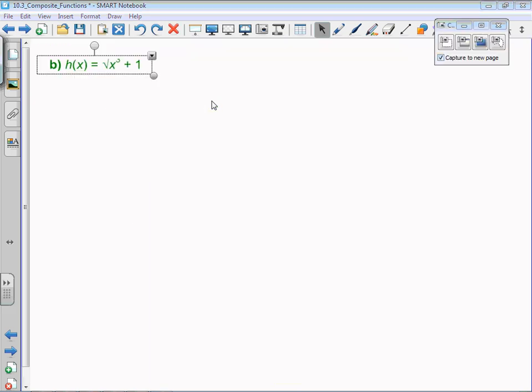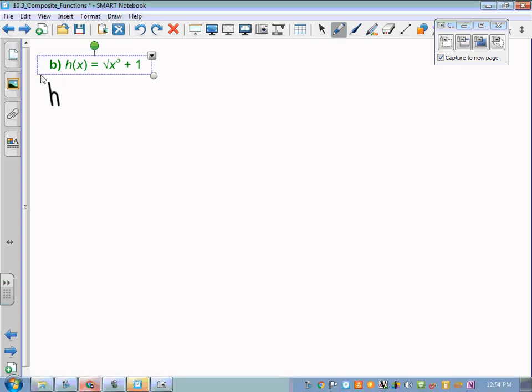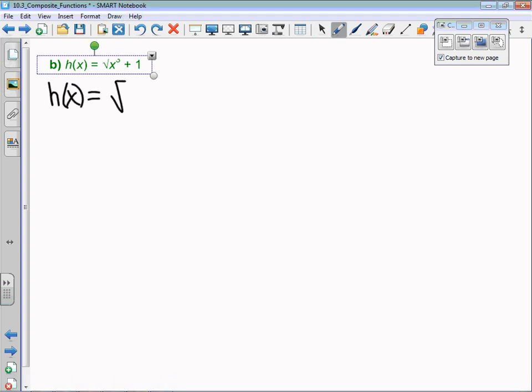All right, so I cut off a little bit, but I think this is enough. I'll rewrite it here. That h of x is the square root of x cubed plus 1. Now, right away for me, if I see a square root, I think to myself, okay, that's going to be my outer function. My outer function is the square root of an x variable, but it's not the square root of x. It's the square root of x cubed plus 1.